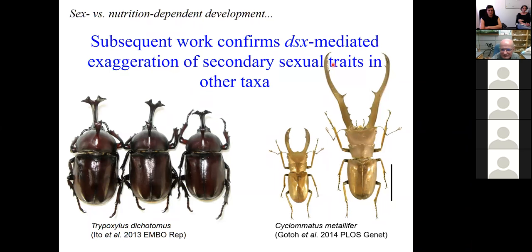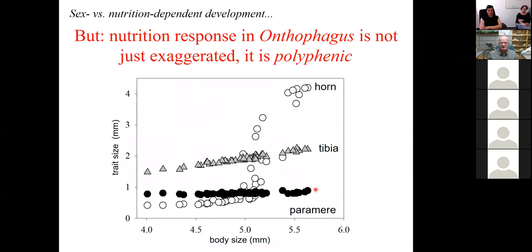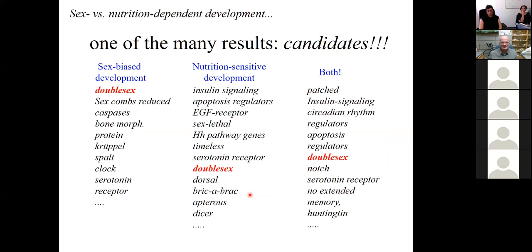Here is work by Ito et al on rhinoceros beetles and corresponding work on stag beetles. In all of these doublesex plays a major role in the nutrition dependent exaggeration of secondary sexual traits. But I still want to highlight an important difference. And that is horns in our beetles are not just exaggerated. They're also polyphenic. That is, we have a critical body size threshold below which horns are essentially absent or very rudimentary. And it's only above this threshold that we get the dramatic exaggeration of horns. So doublesex alone may be able to explain that exaggeration, but by itself, it is hard to envision how it can generate a threshold response like this. And here I want to introduce you to the second candidate. And that is the hedgehog signaling pathway, which showed up in multiple contexts in our various RNAseq studies.